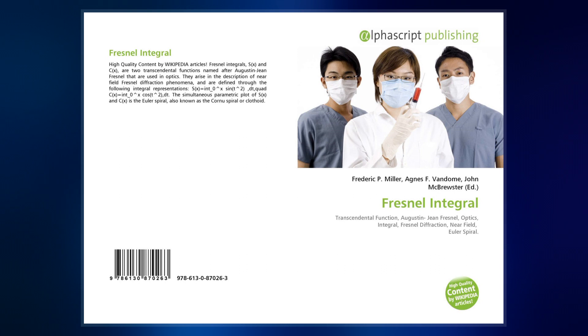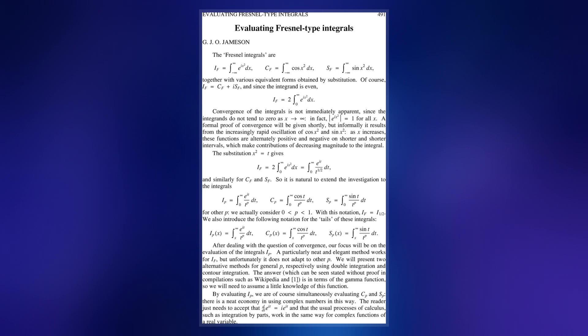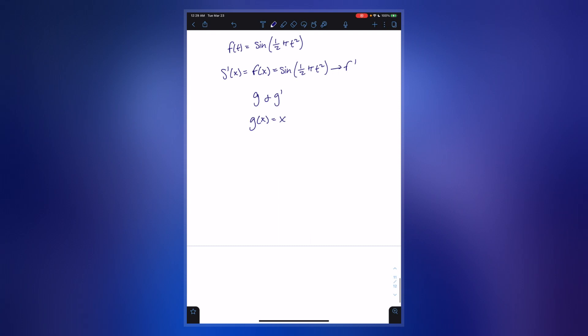This changes their limits at infinity from 1/(2√π) to 1/2 and the arc length for the first spiral turn from 2√π to 2. These alternative functions are usually known as normalized Fresnel integrals.